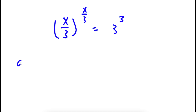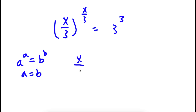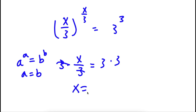Now, if I have something in the form a to the power of a equals b to the power of b, this means a equals b. So in this case, x over 3 is equal to 3. I have a simple equation — all I have to do is multiply both sides by 3. These cancel out, and x is equal to 3 times 3, which is 9.